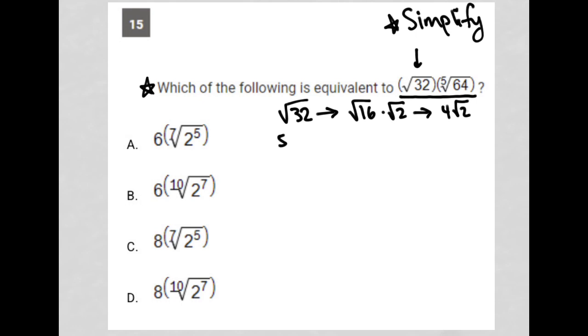The fifth root of 64 can be simplified to the fifth root of 2 to the fifth, 2 to the fifth power is 32 by the way, multiplied by the fifth root of 2, which gives me 2 fifth root 2. Because the root and the radical cross out here leaving you just a 2 here.